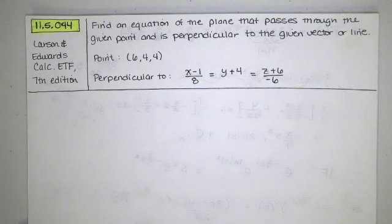In this video we solve problem 11.5.044 from the Larson and Edwards Calculus Early Transcendental Functions text, 7th edition. We're asked to find the equation of a plane that passes through a given point and is perpendicular to the given vector or line.